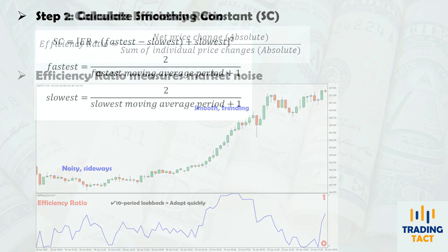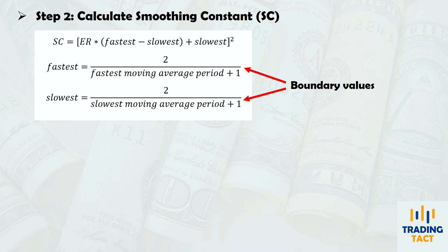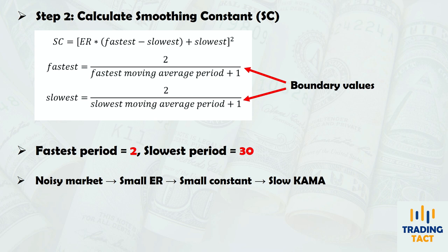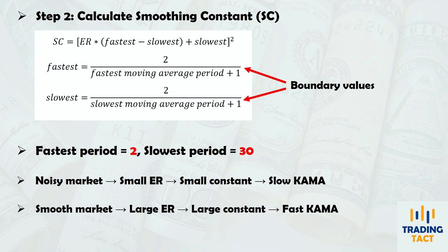Next, we calculate the smoothing constant for each period. These boundary values define the fastest and slowest speeds at which the KAMA will react to prices. By default, the fastest moving average period is set to 2, while the slowest moving average period is set to 30. For example, if you want the KAMA to be less sensitive to prices, set the fastest moving average period to be greater than 2. Noisy markets produce small smoothing constants, and the resulting KAMA becomes more unresponsive to prices. Smooth trending markets produce larger constants, and the KAMA will follow prices closely.